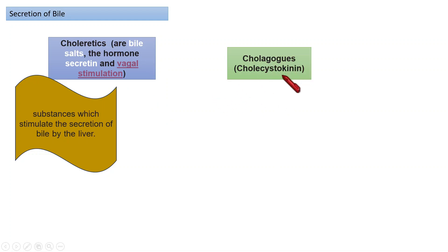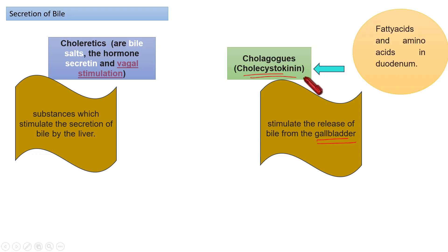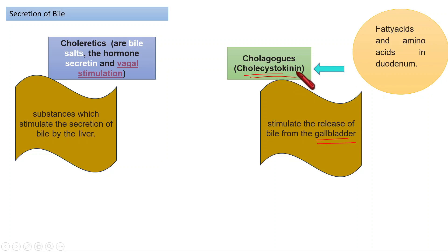The next term is cholagogues — these are certain substances that stimulate the gallbladder to release bile into the intestine. An important and powerful cholagogue is cholecystokinin (CCK), which is secreted by the duodenum when the duodenum contains fatty acids and amino acids. Cholecystokinin then stimulates the gallbladder to release bile.